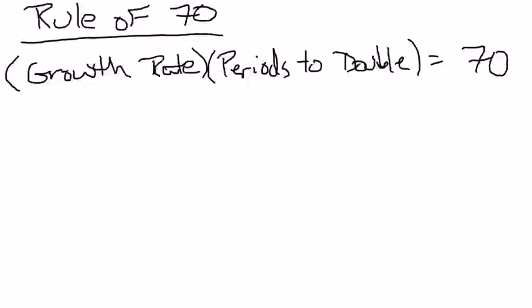Hi everyone. I just want to talk a little bit about the rule of 70, which is a very useful rule when you're dealing with growth rates. And all the rule of 70 says is the growth rate of a variable times the periods to double equals 70.